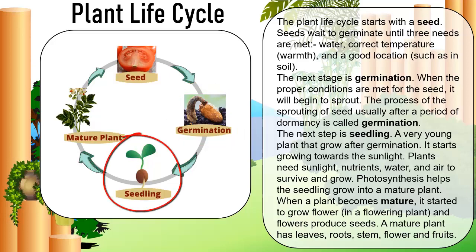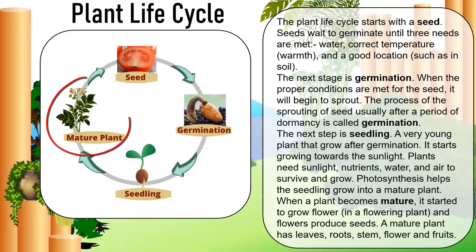The next step is the seedling — a very young plant that grows after germination. It starts growing towards the sunlight. Plants need sunlight, nutrients, water, and air to survive and grow. Photosynthesis helps the seedling grow into a mature plant. When a plant becomes mature, it starts to grow flowers, and flowers produce seeds. A mature plant has leaves, roots, stem, flower, and fruits.